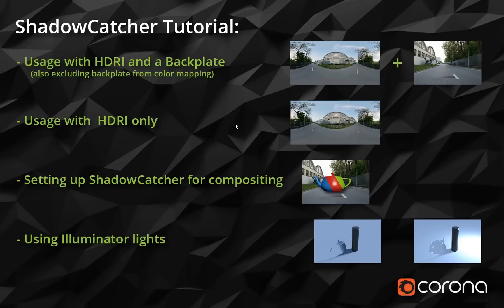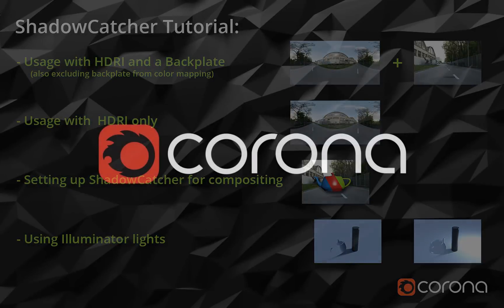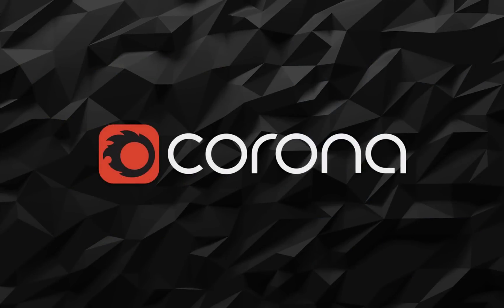The third part will be about setting up Shadowcatcher for compositing — basically just having a separate layer of our CG objects and then compositing it on top of the backplate. And the last part will be about using illuminator lights. So that's it, and I will see you in the next lesson where we will be covering usage with HDR and a backplate.